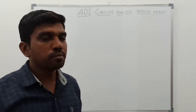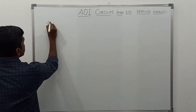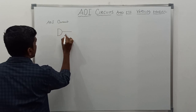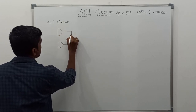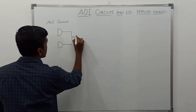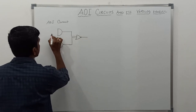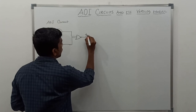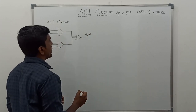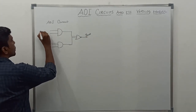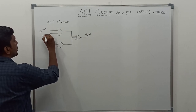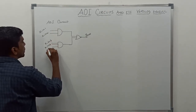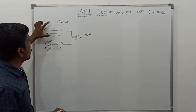So these things we will discuss in today's session. Let me draw the AOI cycle. This is the AND operation, and this one is also an AND operation. The two outputs of the AND gates feed into a NOR gate. This is the two-input AND gate, and this one is the three-input AND gate. The output is Y out, which is the output signal. The inputs are X in 1, X in 2, X in 3, X in 4, and X in 5. So this is the AOI cycle.